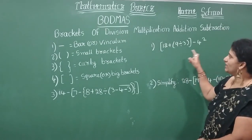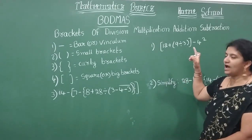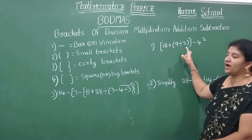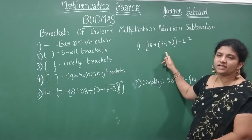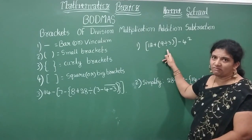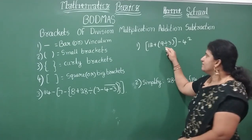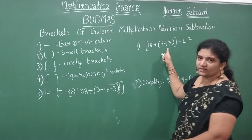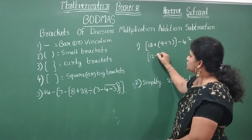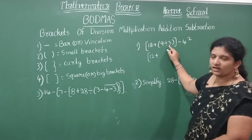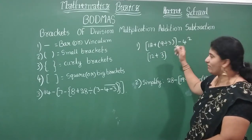So now BODMAS rule will help you. Do you have any bar here? Not there. Division? Yes, I have a division here, 9 divided by 3. First solve this division. 9 divided by 3, what you are going to get? 3. First I need to do the division which is in round brackets.